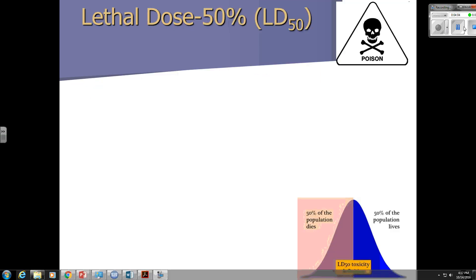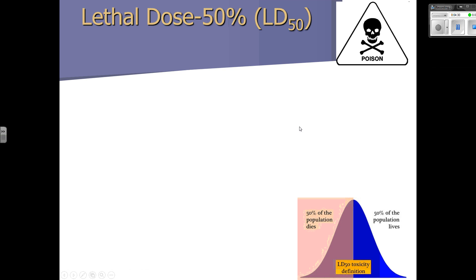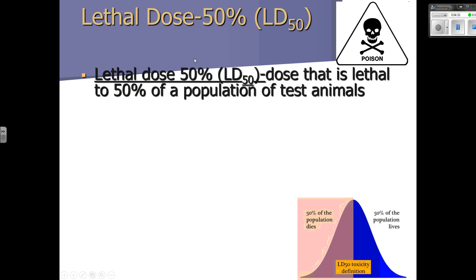Next slide: LD50. You'll see this written as LD50 — it stands for lethal dose, 50%. The word lethal means deadly. Dose is the amount of toxicant entering the body. The 50% refers to the number that is going to kill 50% of the test population. The definition from your book: a dose that is lethal to 50% of the population of test animals. It's very important to emphasize test animals, because we cannot perform an LD50 on humans — it would be unethical.